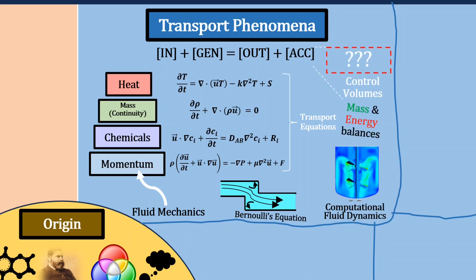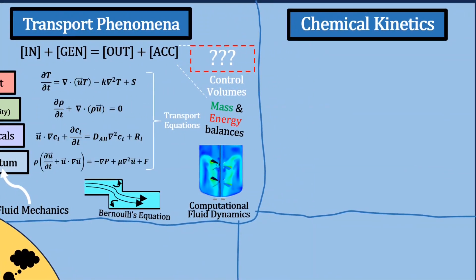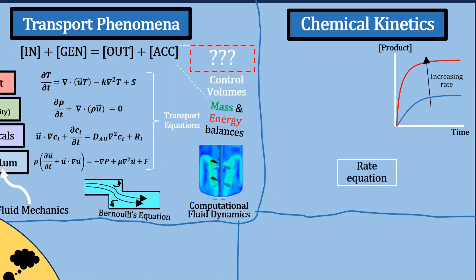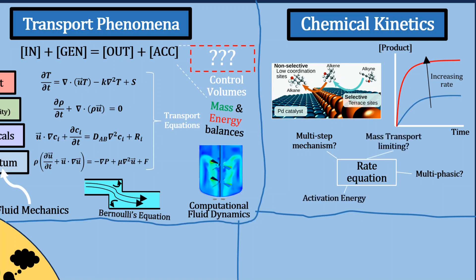Chemical kinetics also play a big role in chemical engineering — in other words, how fast is a chemical reaction happening? How can we describe this using a rate equation? Do we have a catalyst involved that speeds up the reaction rate, and what phase is that catalyst in? Is it a solid? Is it a liquid? All this affects the rate, and understanding this link is critical for designing robust systems.